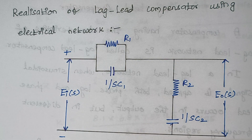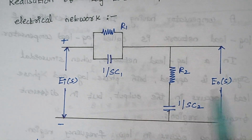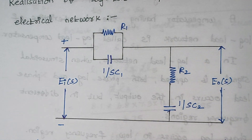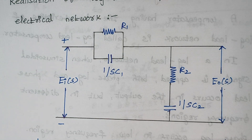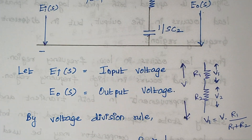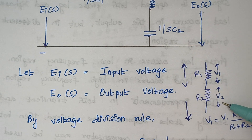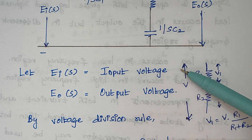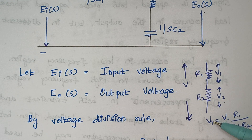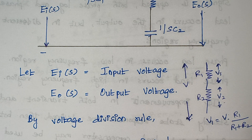Next is the realization of the lag-lead compensator using an electrical network. Ei(s) is the input voltage and E0(s) is the output voltage. We are going to apply the voltage division rule to calculate the output voltage. The basic voltage division rule: with two resistors R1 and R2 and input voltage V, the voltage V1 across R1 is V1 = V × R1 / (R1 + R2).